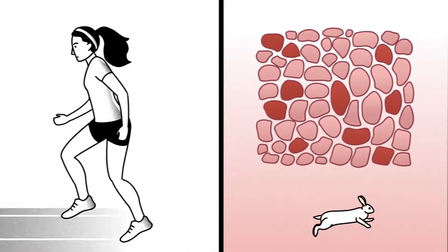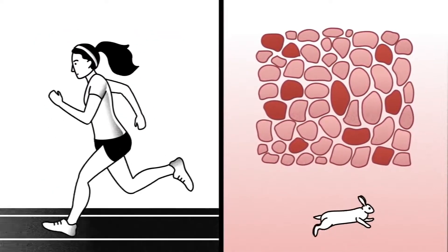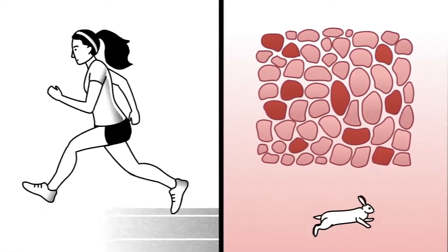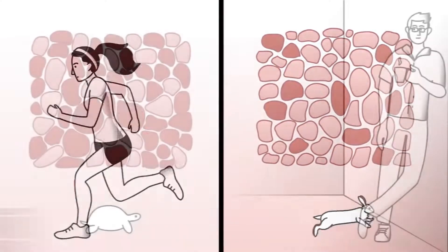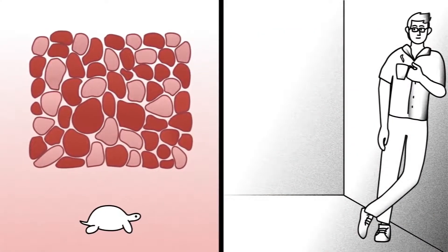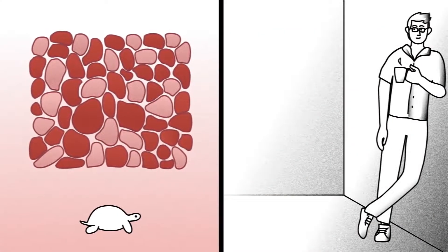A sprinter will accumulate more fast-twitch muscles in her legs through continuous practice, enabling her to quickly, if briefly, pick up the pace, whereas back muscles contain more slow-twitch muscles to maintain your posture all day.